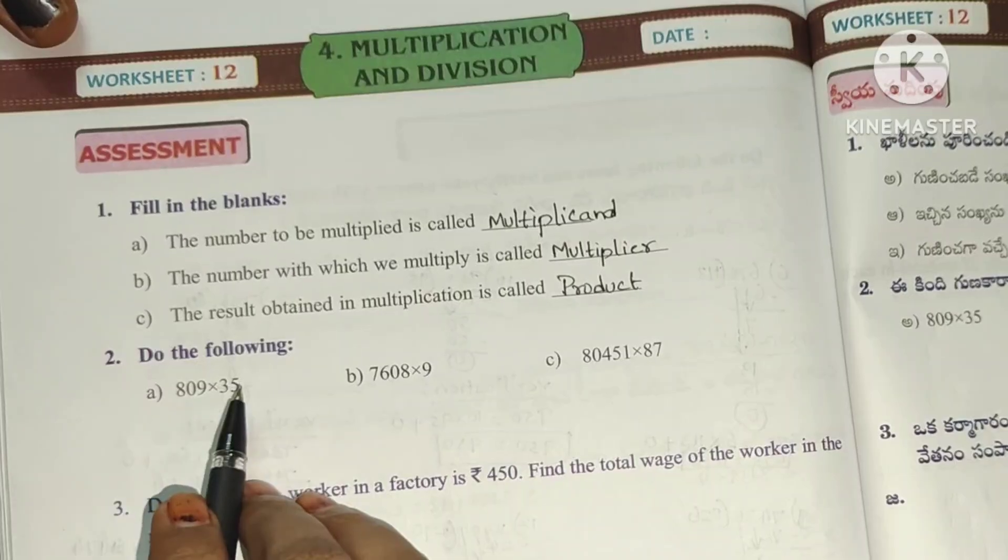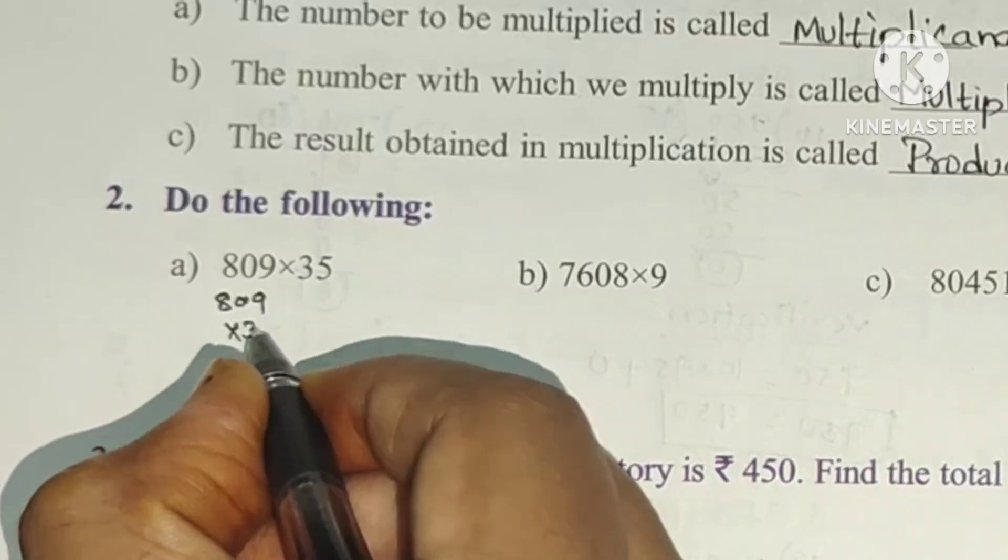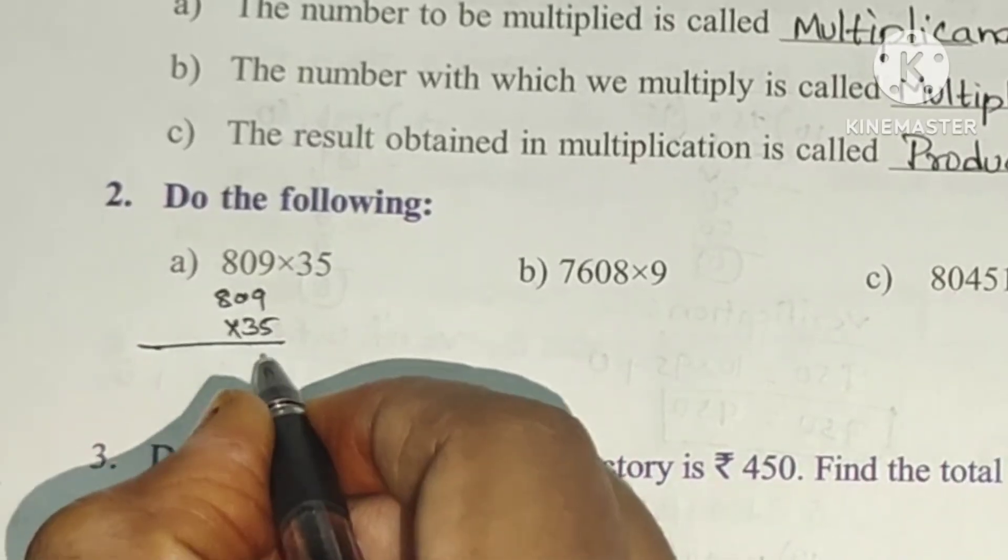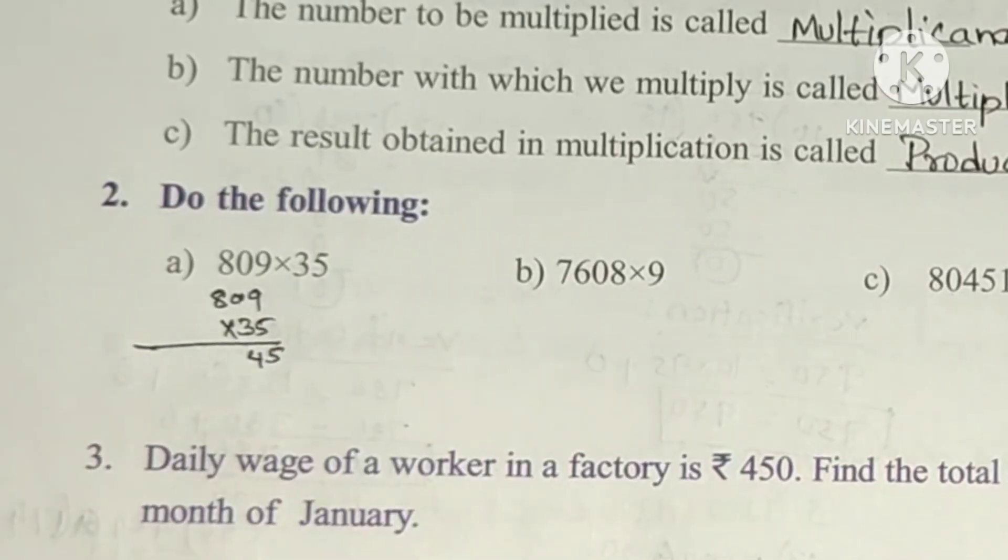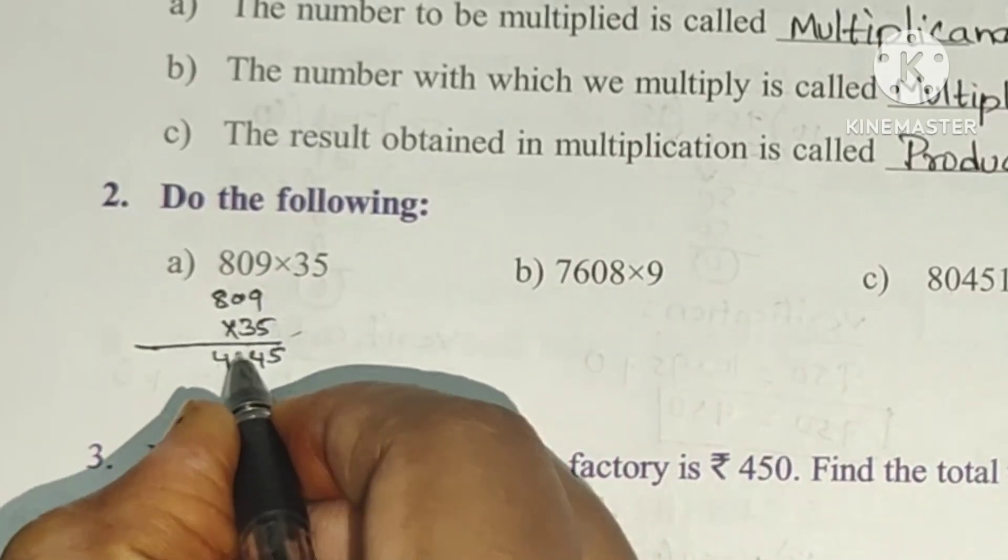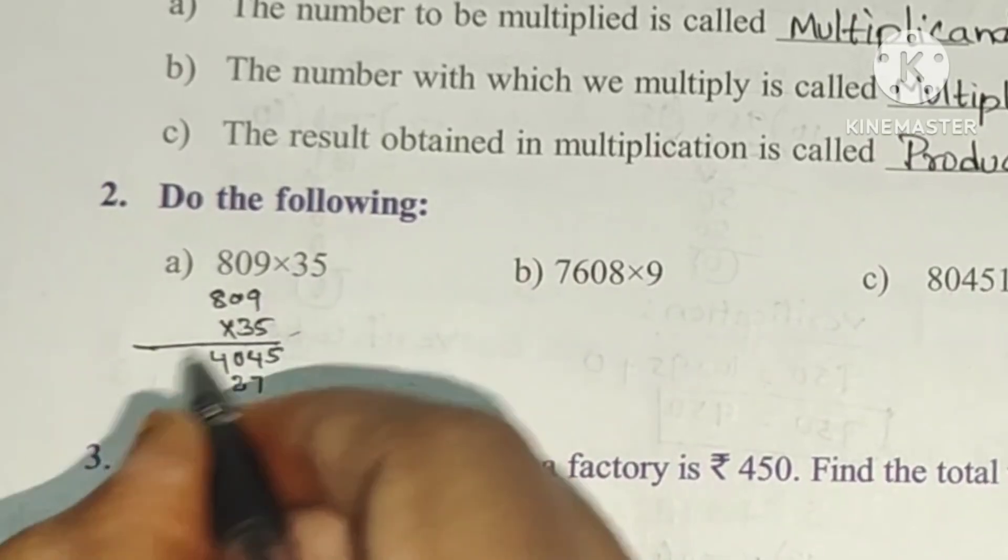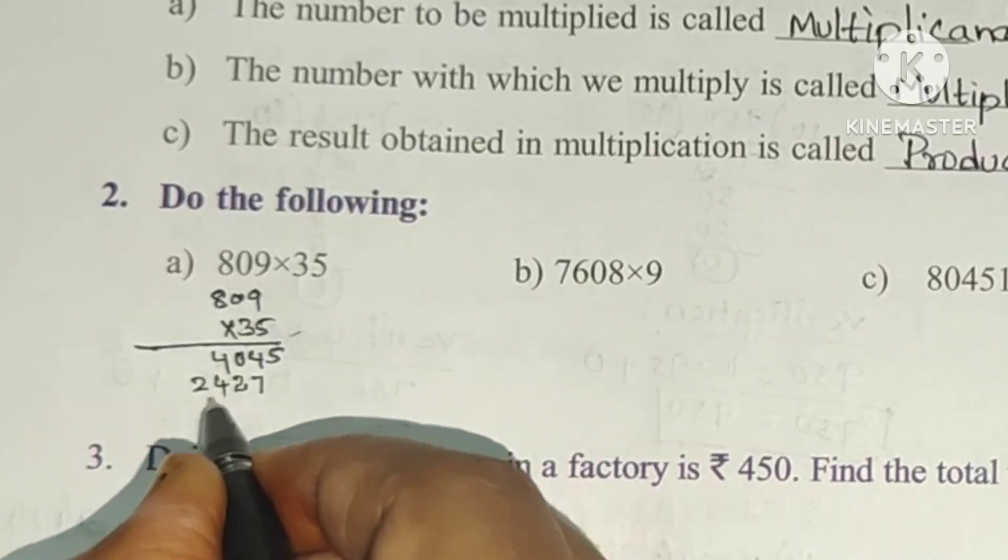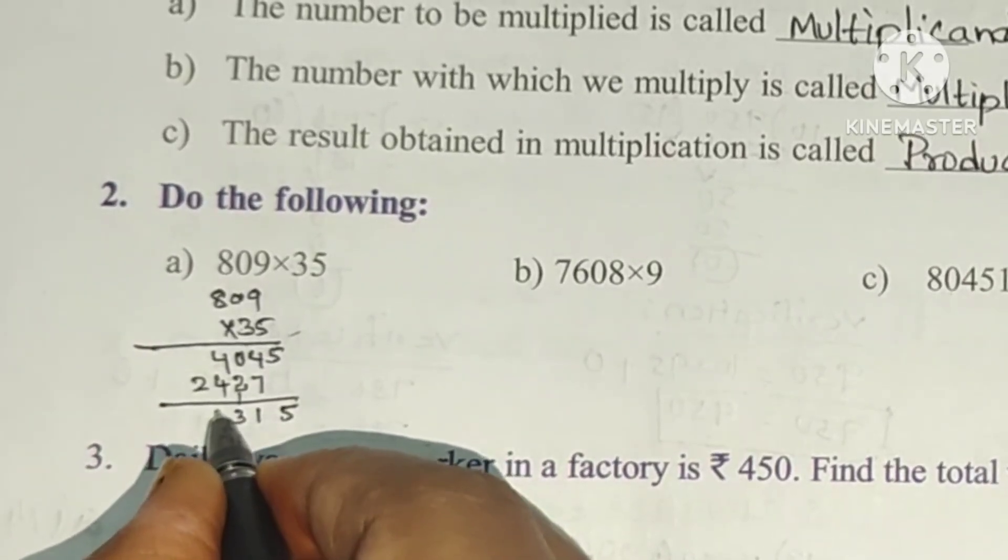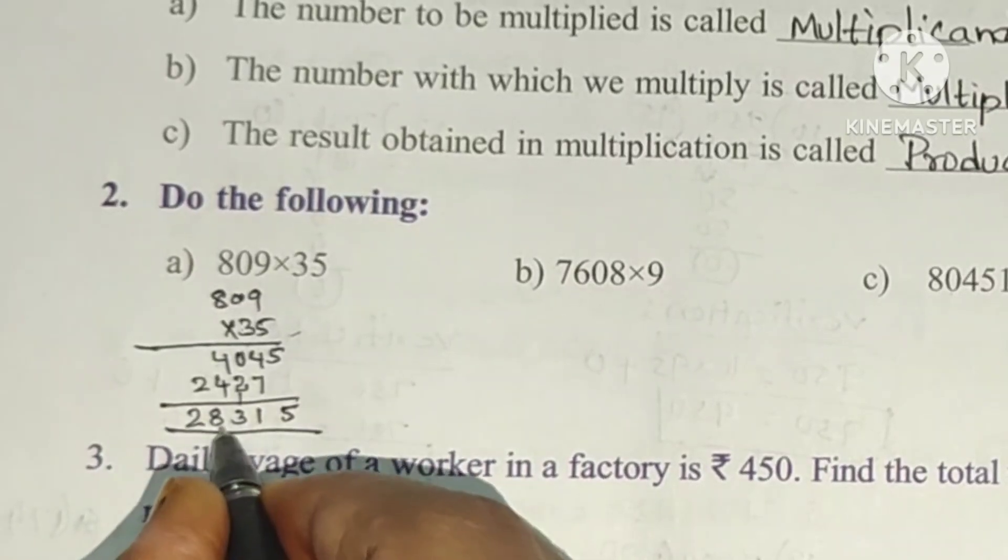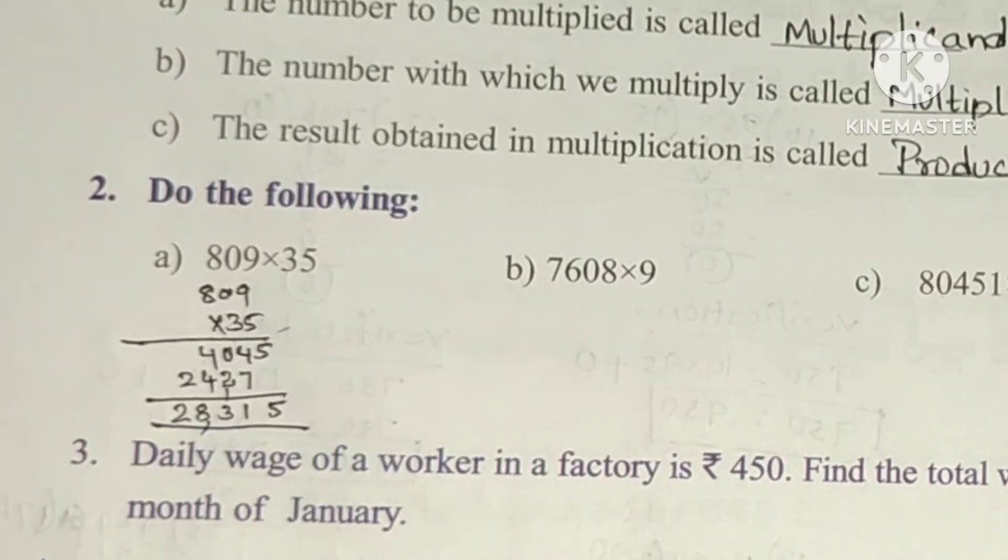Next, do the following. 809 times 35. 5 times 9 is 45, write 0. 5 times 8 is 40, so 3 times 9 is 27, write 0. 3 times 8 is 24. So 45 plus 2700 plus 2400 equals 28,315.